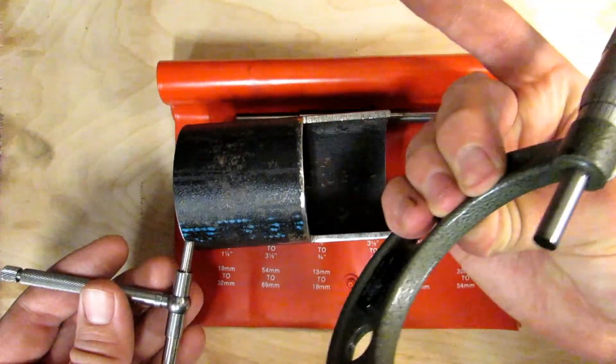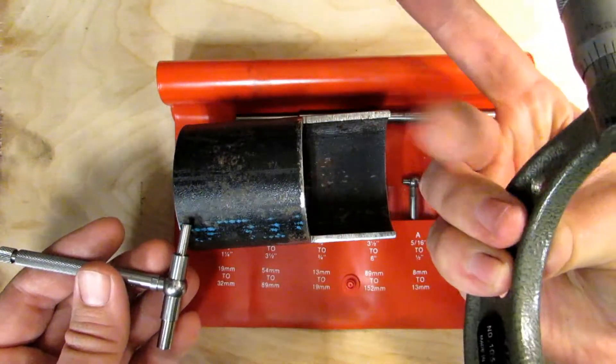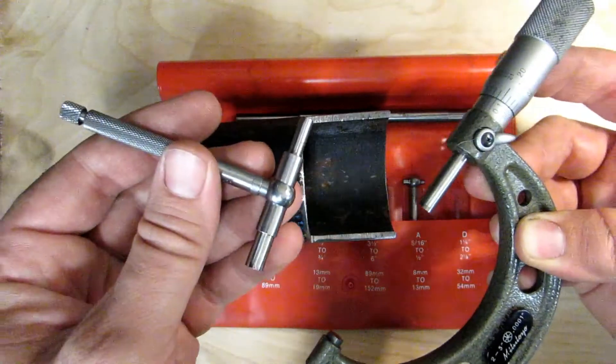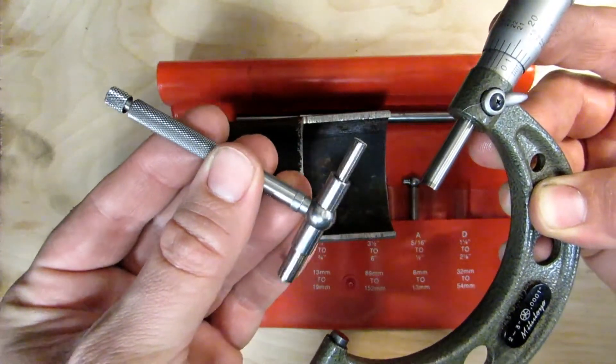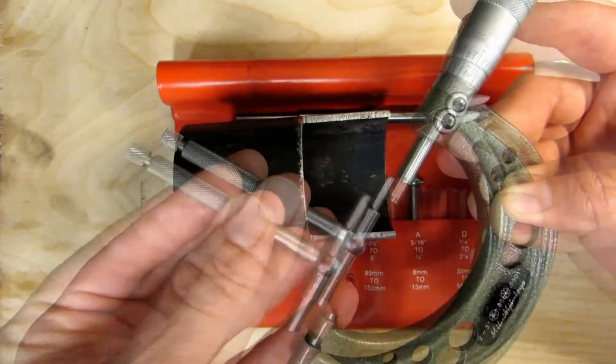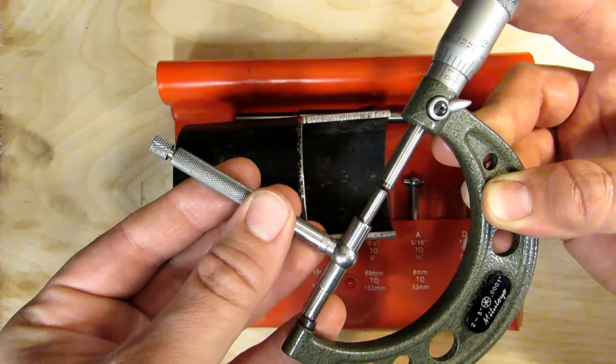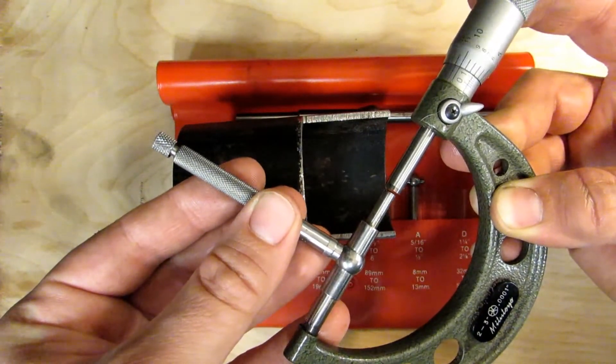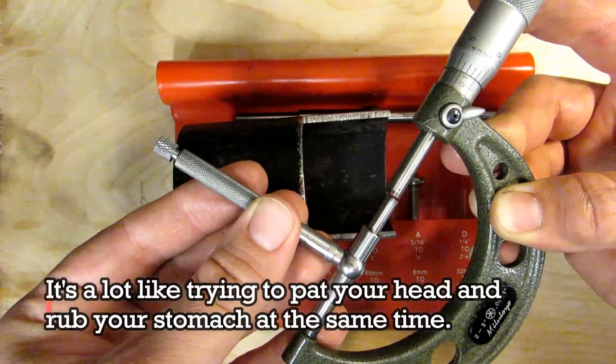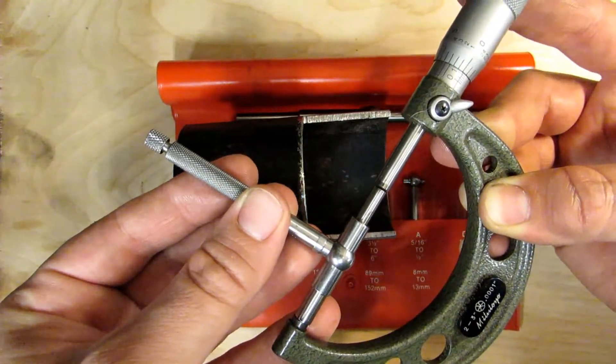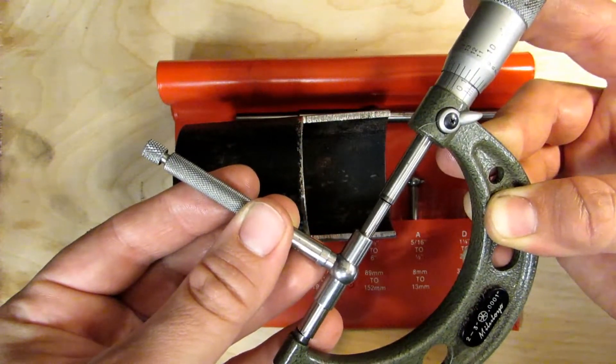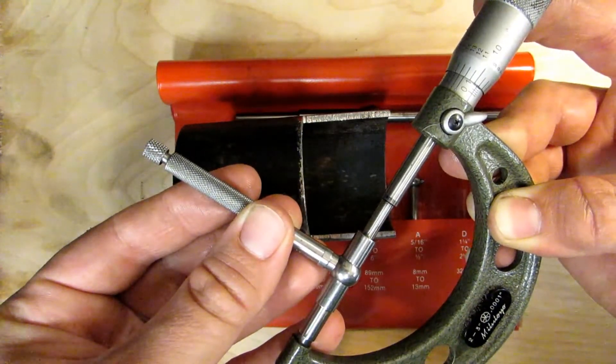What I usually like to do is hold my micrometer between my thumb and these three fingers here. This allows me the freedom to move the thimble on the micrometer. Meanwhile, I've also got the telescoping gauge in between these fingers, and that allows me to rock it back and forth. So what I'm trying to do is close the micrometer very slowly while also moving the head of the telescoping gauge back and forth. What you're trying to do is find the exact same feel that you had on the bore of whatever it is you're measuring.